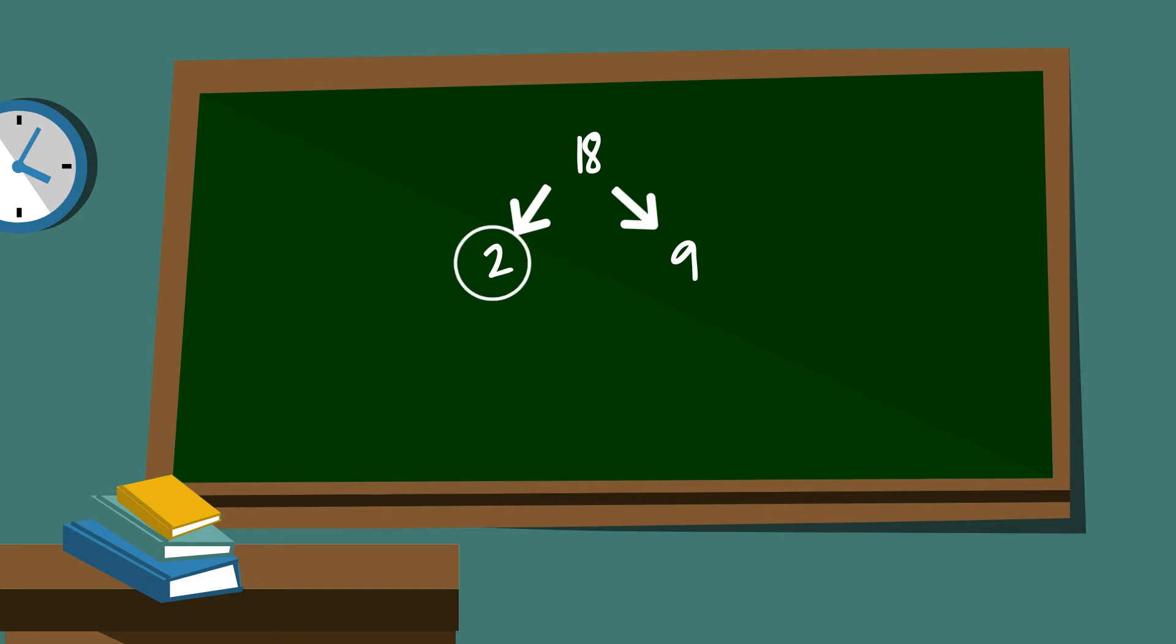Now 9 is divisible by 3. 3 times 3 equals 9. I will circle both of those. So the prime factorization of 18 is 2 times 3 times 3.